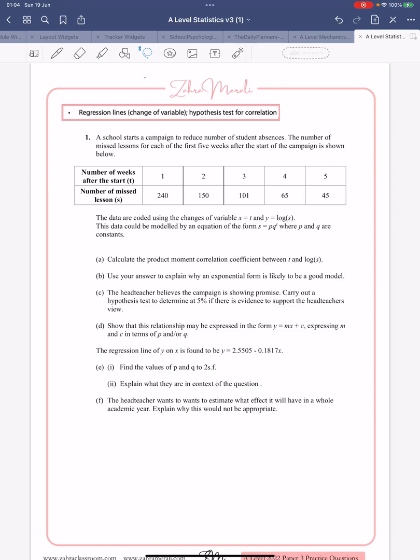Hi, okay, so we're looking at regression lines and the change of variable and also a hypothesis test for correlation. That's what was given in the advanced information. The change of variable I suspect could be an exponential change, so this is using the last chapter in AS when you do exponentials. I've tried to write a question around it. We've got a school that starts a campaign to reduce student absences, and the idea is the absences go down, so we're expecting a negative correlation because as the weeks go up the missed lessons are going down.